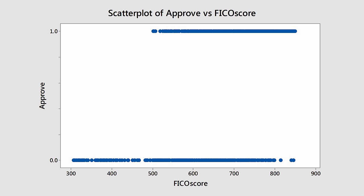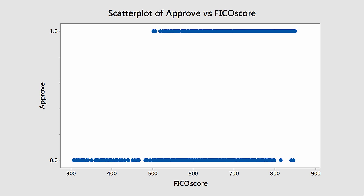So if you look at the left-hand side, we have 'approved' with 0 at the bottom — meaning the application was not approved — and 1 at the top, meaning it was approved. The data points appear in two lines. The credit score (FICO score) is along the bottom. If the dot is on the bottom, the application was not approved for that credit score; if it's at the top, it was approved. Now, how can we put a best-fit regression line on a scatter plot that looks like this? It doesn't make sense to do it the way we would in normal linear regression. Obviously, we need some other technique — and that's what logistic regression allows us to do.